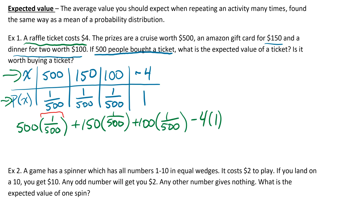When you put all of that in your calculator, you should get negative $2.50. That is the expected value of a ticket. It means that on average, if you bought a whole bunch of these tickets, then for each ticket you can expect to lose about $2.50.